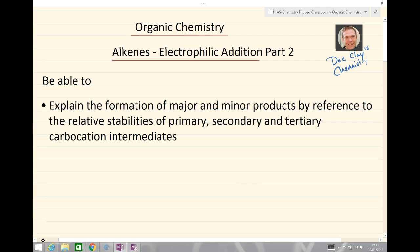Before you do this session, make sure you've done electrophilic addition part 1, because we're going to be looking today at reaction with unsymmetrical alkenes. You should be able to explain the formation of major and minor products by reference to the relative stability of primary, secondary, and tertiary carbocation intermediates.